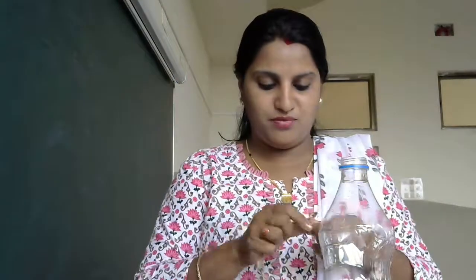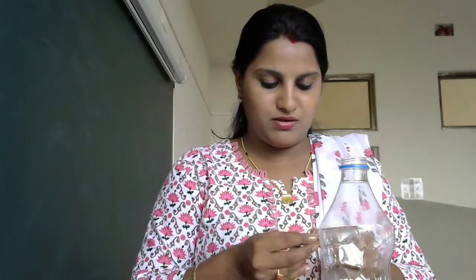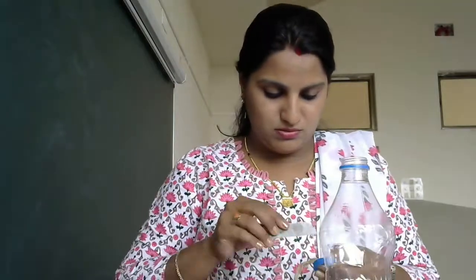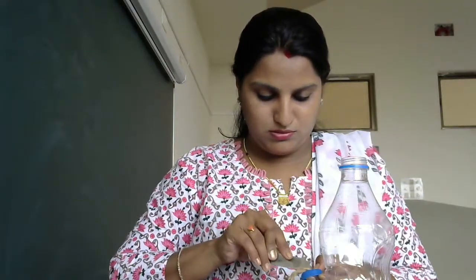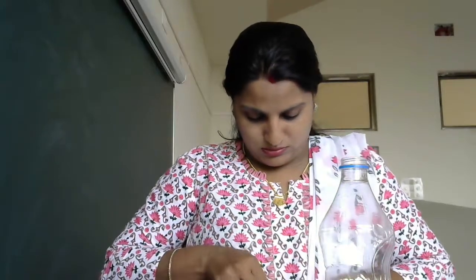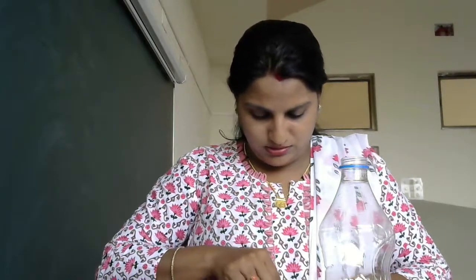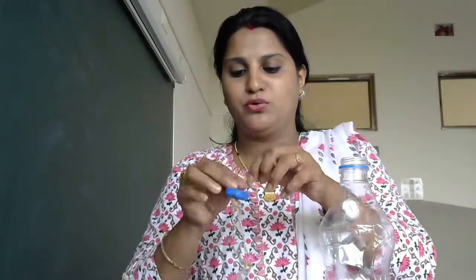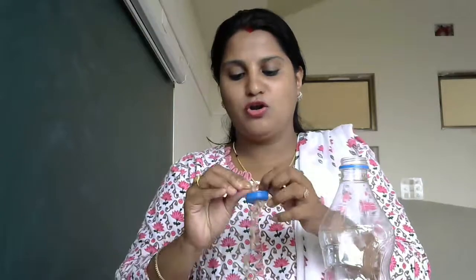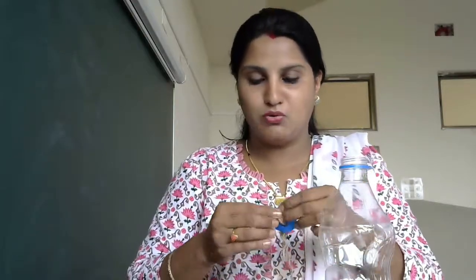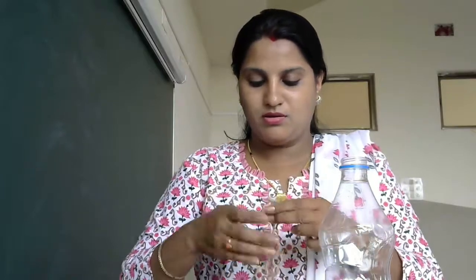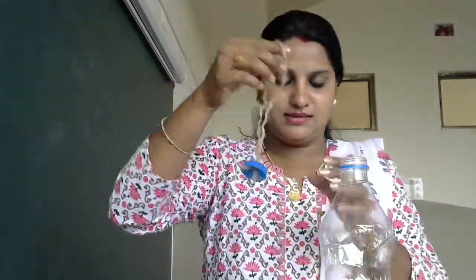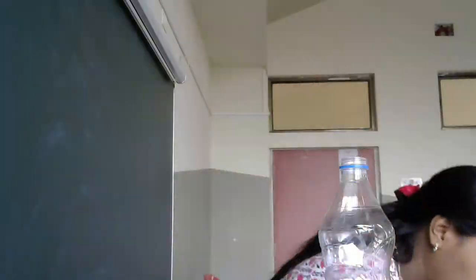Take any string — a jute string works well — and put it through the hole you made in the cap. After threading the string through, make a small knot so the string doesn't come out.